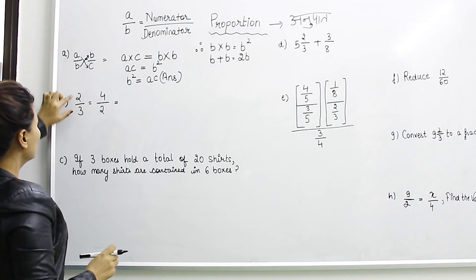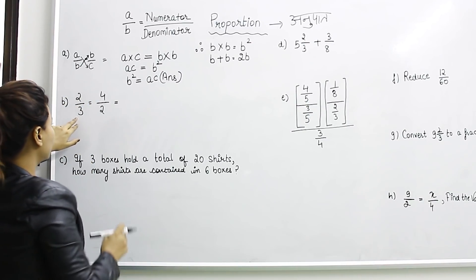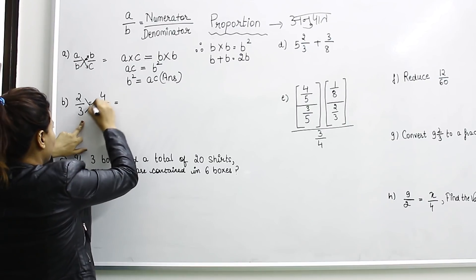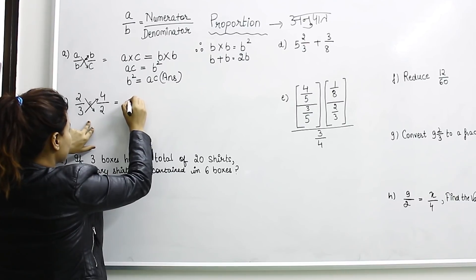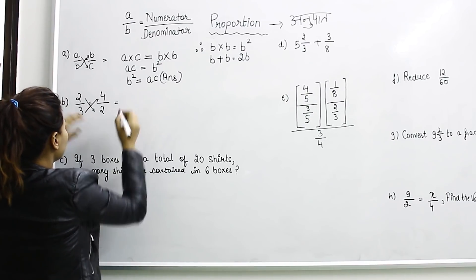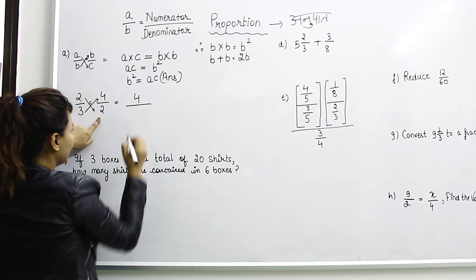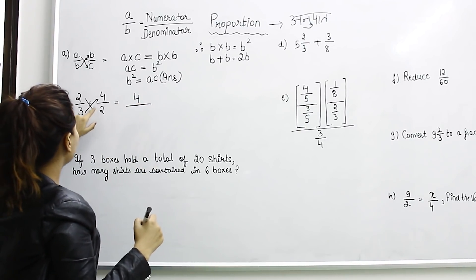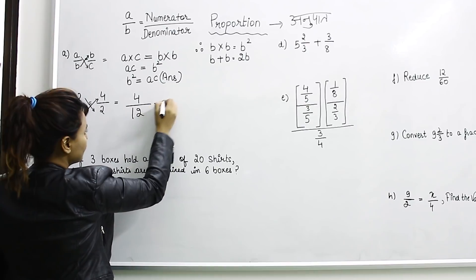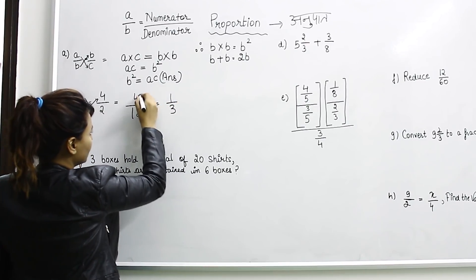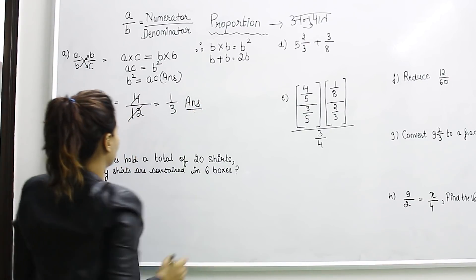Second question: 2 by 3 is equal to 4 by 2. We cross multiply: 2 times 2 equals 4, and 3 times 4 equals 12. Then we divide: the last divided number gives us 1 by 3. So we check whether this proportion holds by cross multiplication.